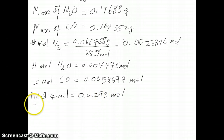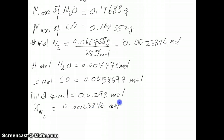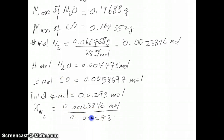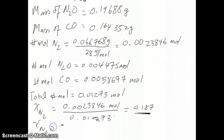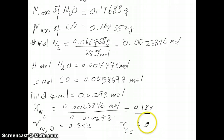Now you can calculate your mole fraction. Mole fraction of N2 is 0.0023846 divided by 0.01273, which gives you 0.187. You can do the same calculation with the other two gases: mole fraction of N2O should give you 0.352, and mole fraction of carbon monoxide should be 0.461.